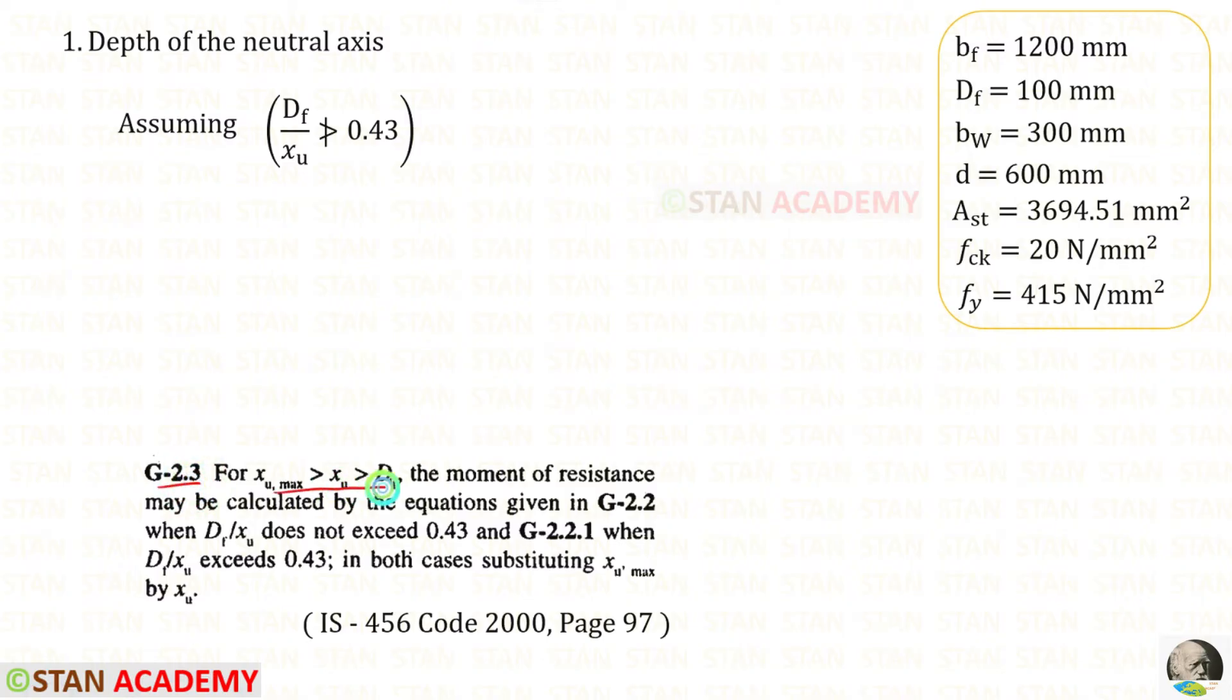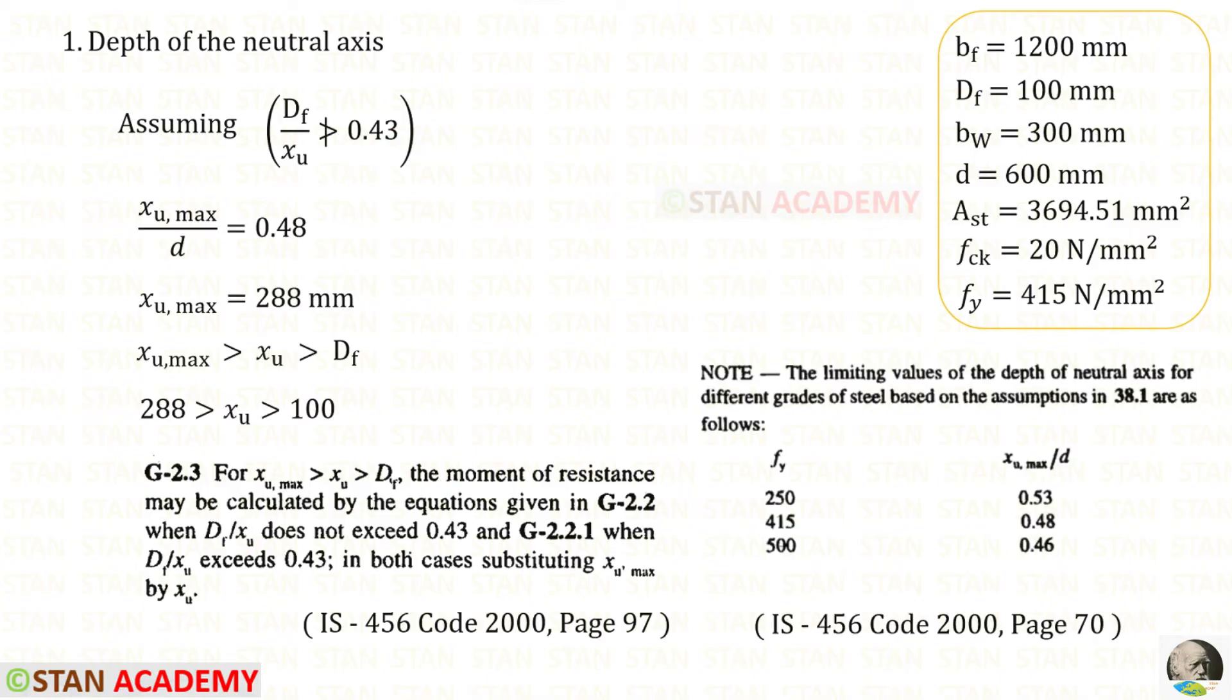For xu,max > xu > df, the moment of resistance may be calculated by the equations given in G2.2 when df/xu does not exceed 0.43, and G2.2.1 when df/xu exceeds 0.43. Let us assume that df/xu does not exceed 0.43. For fy = 415, xu,max/d = 0.48. In this way, for xu,max we will get 288 mm.